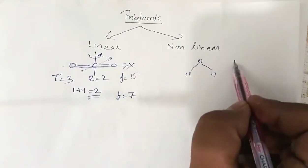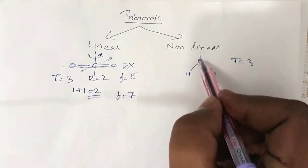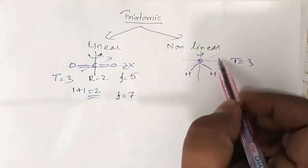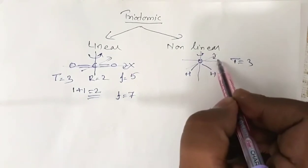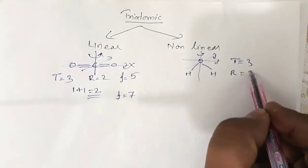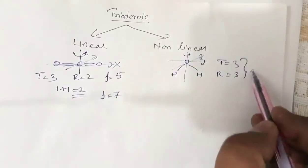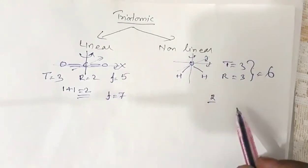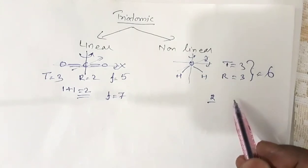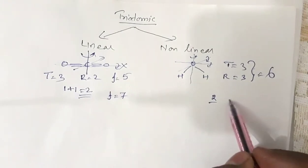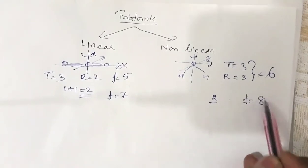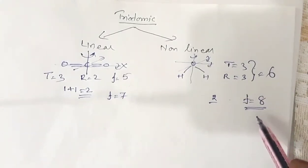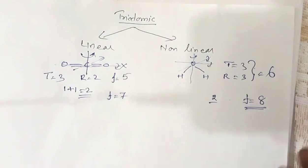For a non-linear molecule like H₂O, translation gives three degrees of freedom. In this case, you cannot neglect rotation about any of the three axes — rotation about each of the three axes contributes one degree of freedom, giving three rotational degrees of freedom. So at normal temperature there are six degrees of freedom total. At higher temperature, two additional degrees of freedom from vibrational kinetic and potential energy bring the total to eight degrees of freedom.